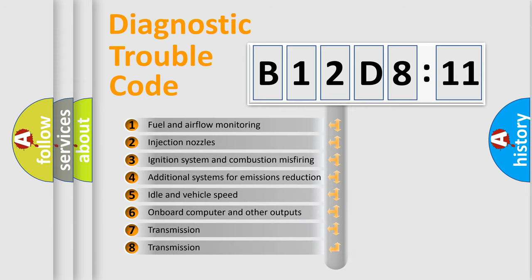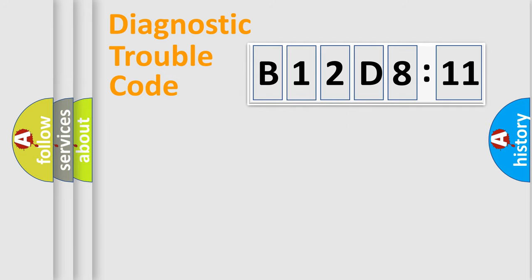The third character specifies a subset of errors. The distribution shown is valid only for the standardized DTC code. Only the last two characters define the specific fault of the group.